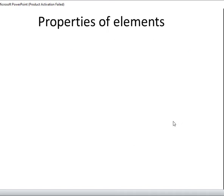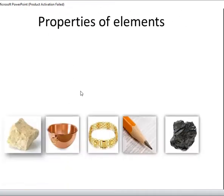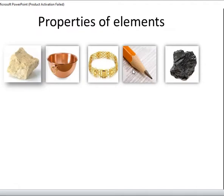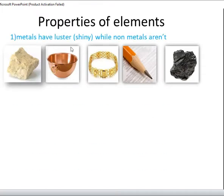Now, properties of elements. We will do some experiments to know the properties of elements. Here are some examples: sulfur, copper, gold and carbon or coal. When you examine these elements, you will see that copper and gold look shiny, while the other elements aren't shiny. So metals have luster — meaning they are shiny — while non-metals aren't shiny.